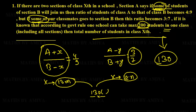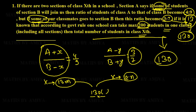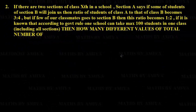To recap: 4 plus 9 is 13, so total must be a multiple of 13; 3 plus 7 is 10, so total must be a multiple of 10. LCM of 13 and 10 is 130, and less than 200 gives only 130. Now it's your turn — pause the video, read question number two, and solve it.